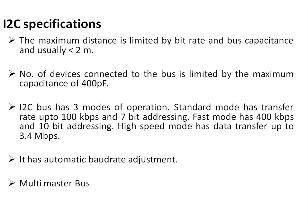High speed mode supports data transfer up to 3.4 Mbps. I2C has automatic baud rate adjustment — unlike RS-232 which has a fixed baud rate — here the clock speed can be varied depending on the requirement, causing automatic baud rate adjustment. It is also a multi-master bus, meaning multiple masters can be connected on the bus.